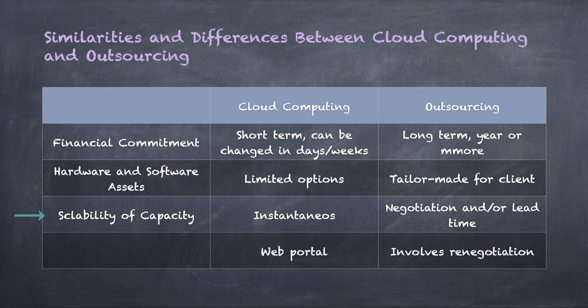Scalability of capacity is instantaneous in the public cloud. You need more capacity? It's on demand, delivered immediately. If you're outsourcing, you've prepaid a contract for a certain amount of resources, and to get more requires renegotiation, or if it's built into the contract, there's some lead time — maybe 30, 60, or 90 days. Also, cloud computing uses a web portal to manage updates and changes to your services, while outsourcing involves contracts and negotiations, so it's not a simple process.